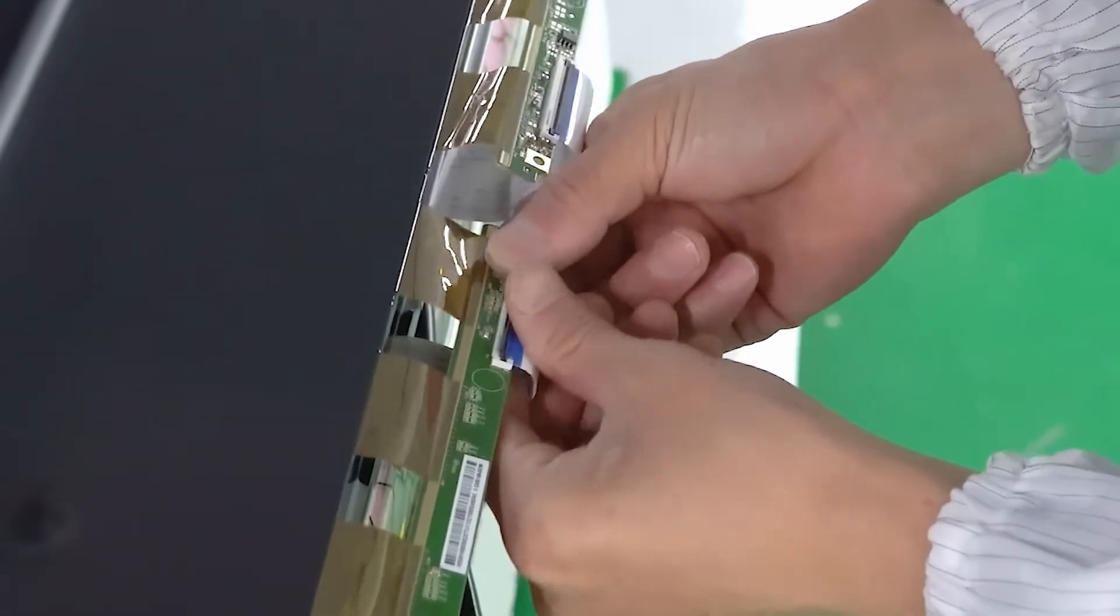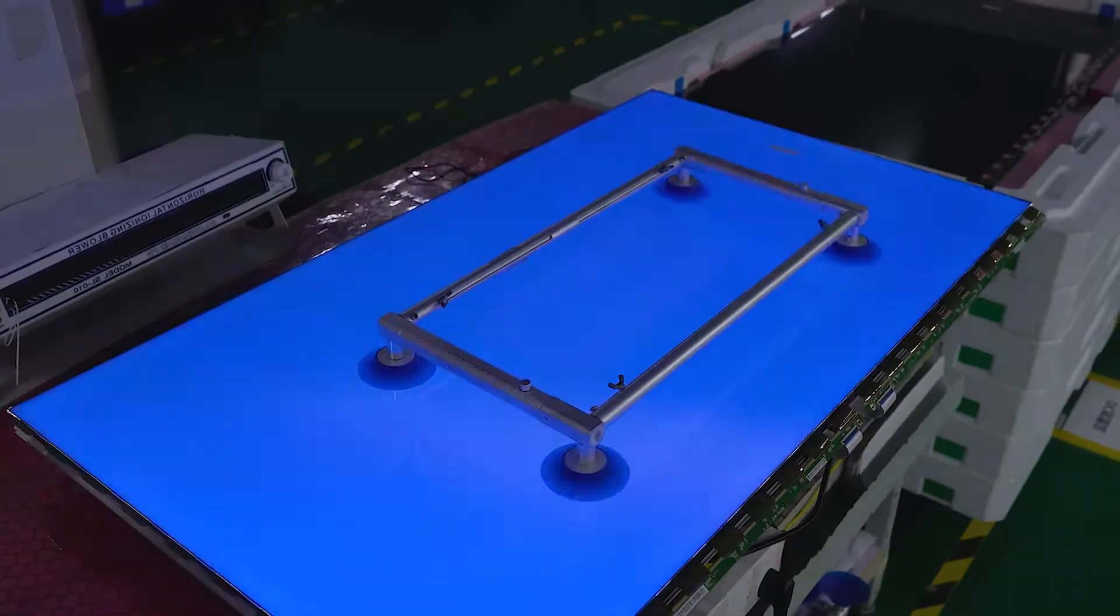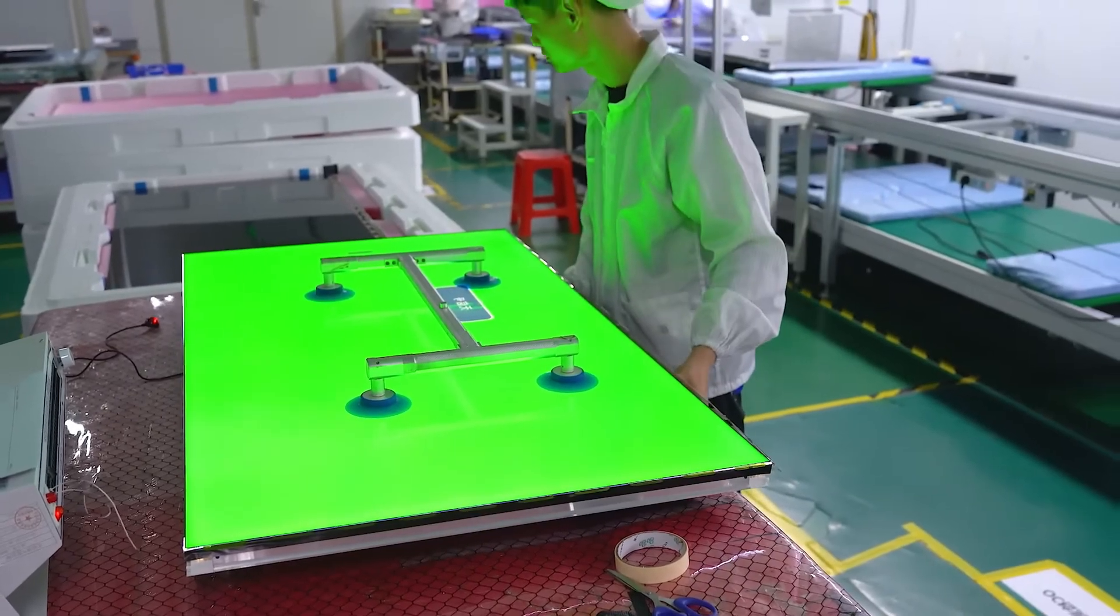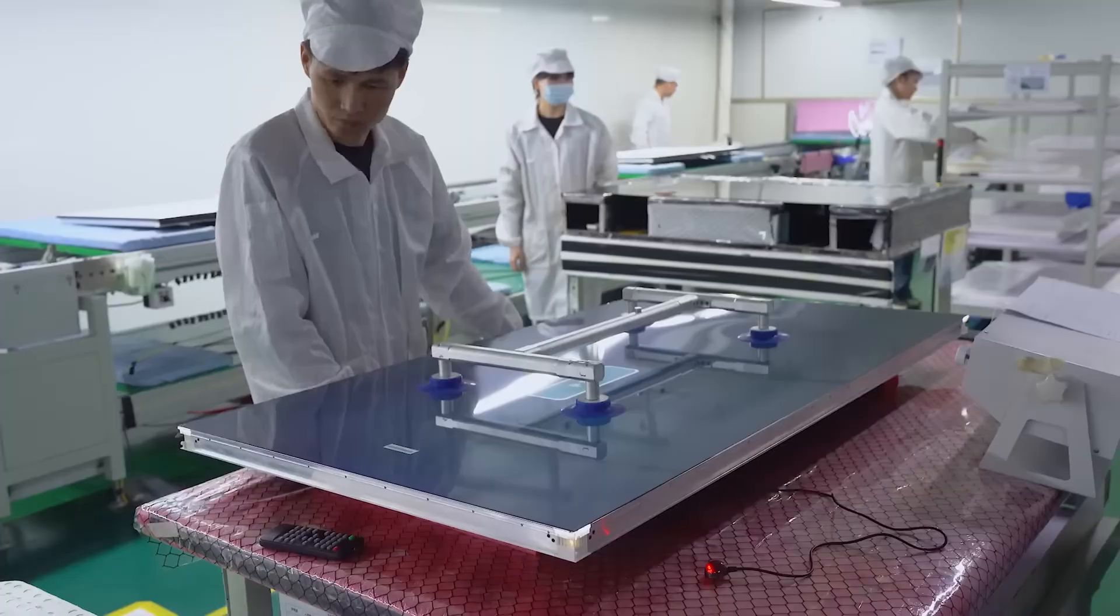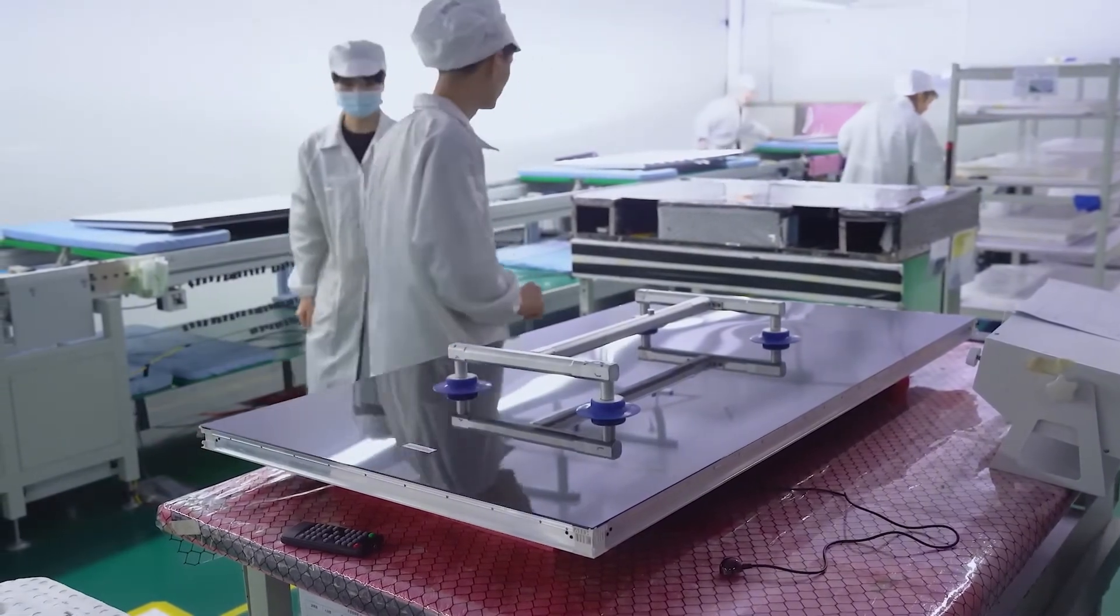Above the TFT array, a color filter is applied. This filter is divided into red, green, and blue subpixels, which combine to produce the full spectrum of colors. The precision in aligning these filters is crucial, as any misalignment can lead to color distortions and affect the overall image quality.